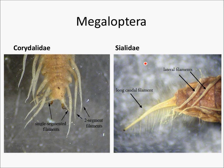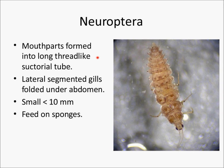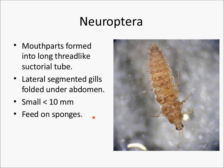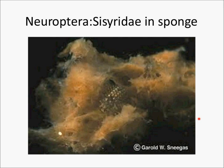The next order is the Neuroptera. There is only one family, the Sisyridae. They have mouthparts formed into a long thread-like suctorial tube, and they have laterally segmented gills folded up underneath the abdomen. The animals are very small — less than 10 millimeters — and they are all adapted to feed on freshwater sponges. Here's a photograph of a Sisyridae larva living inside a freshwater sponge.